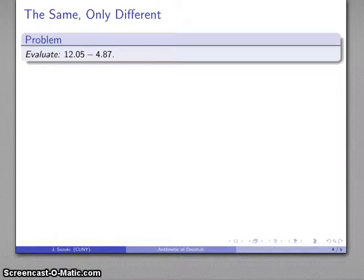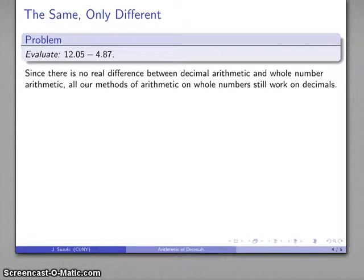Again there is no difference whatsoever between decimal arithmetic and whole number arithmetic. The only thing that changes is we have this decimal point that tells us where the different units are going to be placed. So for example, let's consider the problem 12.05 minus 4.87. Because there's no real difference between decimal arithmetic and whole number arithmetic, everything we did with whole numbers still works.